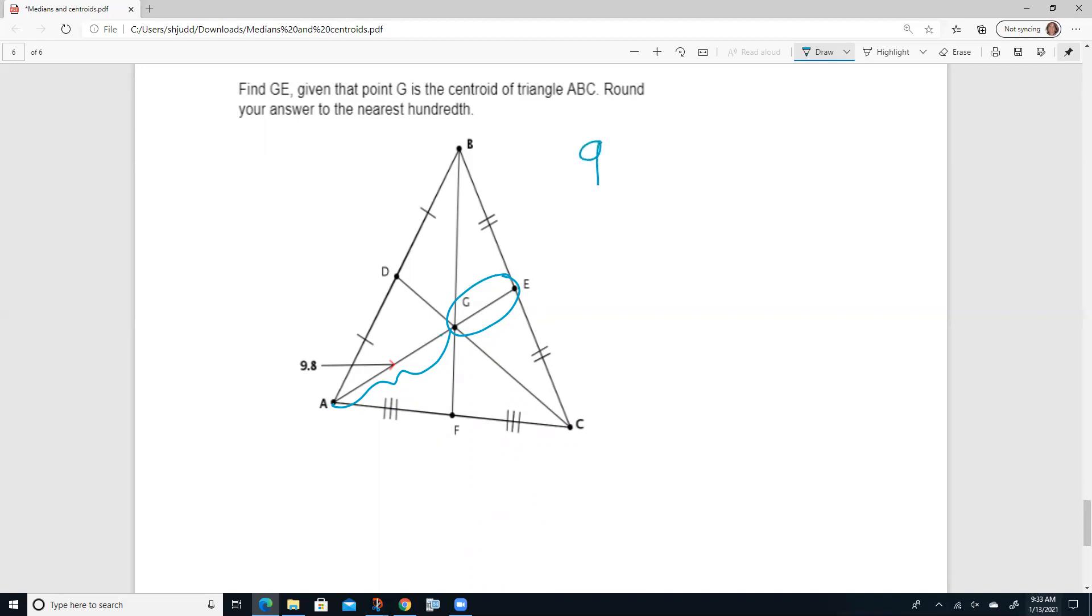So we're going to take that 9.8. We're going to divide by two. And that's going to give us 4.9. It says round to the nearest hundredth. There's nothing in our hundredths place. So we can leave our answer as 4.9.